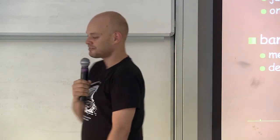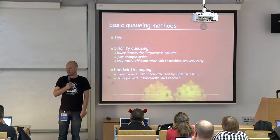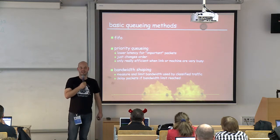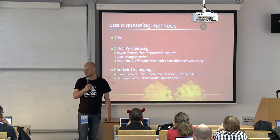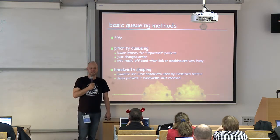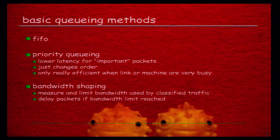The basic queuing methods we care about: there's FIFO, which is what we had forever. There's priority queuing, used to lower the latency for important packets — it also affects which packets get dropped first under load. Priority queuing is really just changing the order in which we take packets off the queue, nothing else. This only really makes a difference when the machine or the link is overloaded or very close to being overloaded.